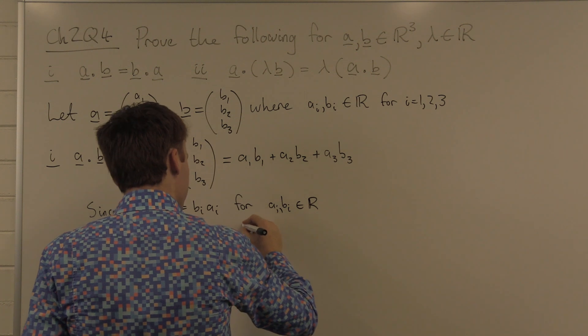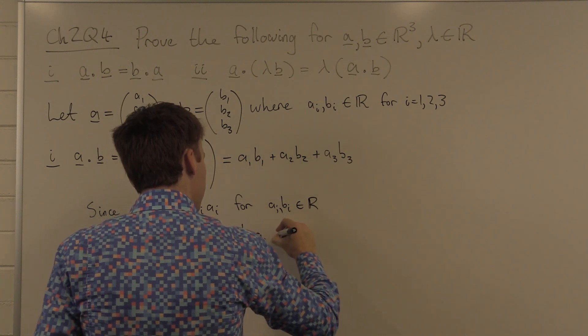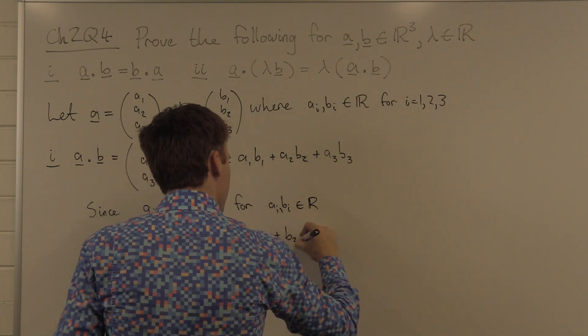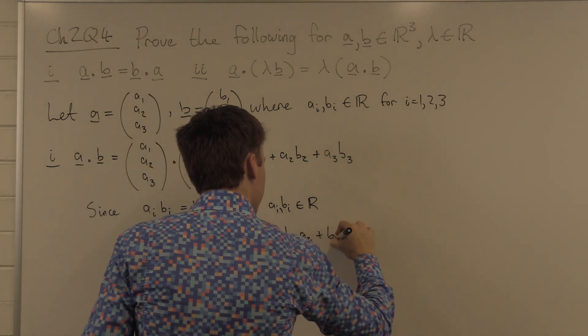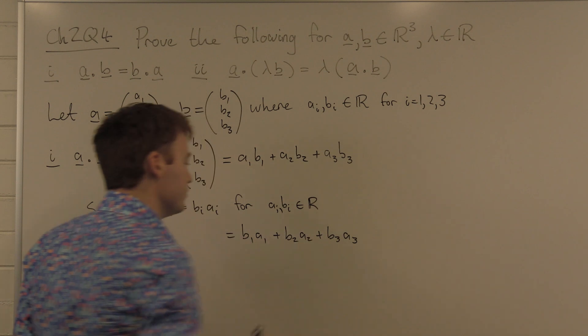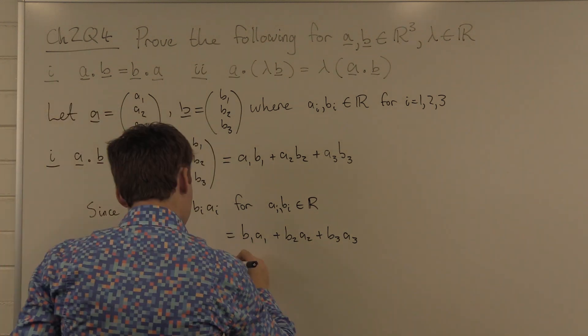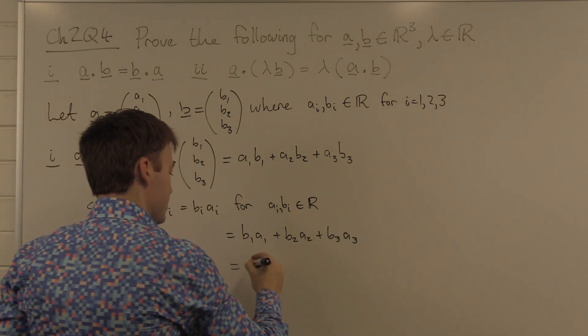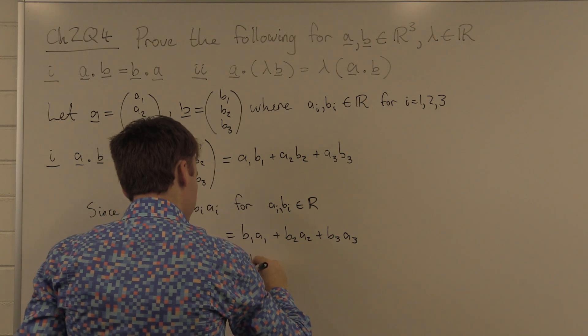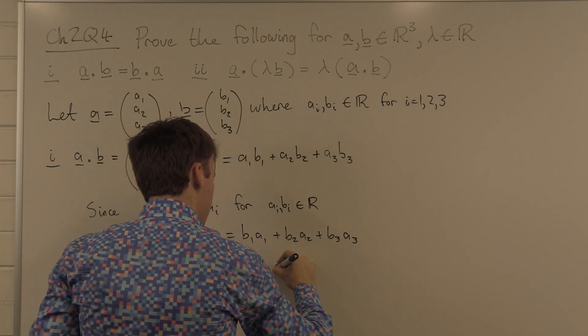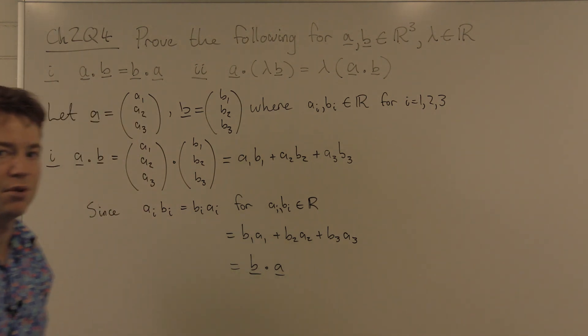This is equal to B1 A1 plus B2 A2 plus B3 A3. And this is equal to B dotted with A. Thank you definition of dot product. This concludes part one.